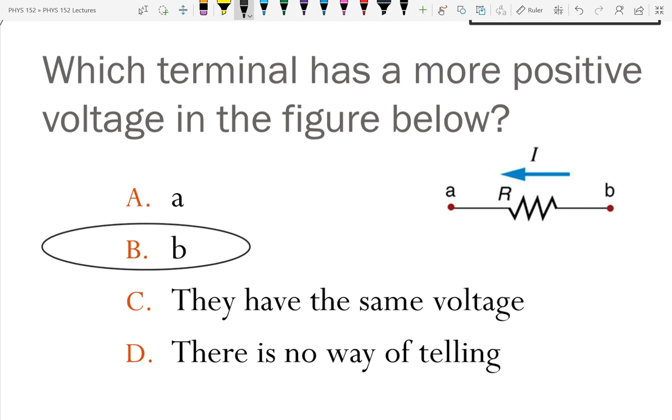Since the current goes from positive to negative, that is a reasonable explanation. The way I explain it is that we know a resistor is going to take away energy, so the voltage, the potential energy per charge, has to be higher on the side the current entered than the side it left. Both of those work. Once you draw the arrow, you can always say that must mean that the positive voltage source is over here where it's coming from.